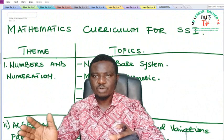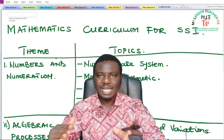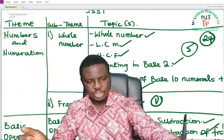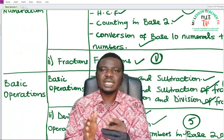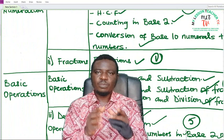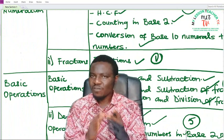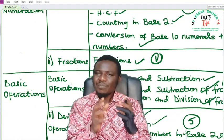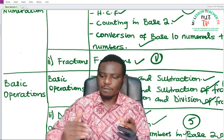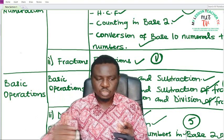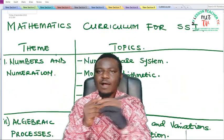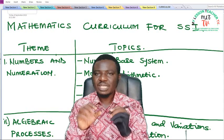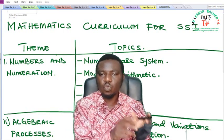Now, what was removed from the junior secondary? The junior had five themes but SS1 and SS2 now have four. The basic operations theme is no longer there, because having done basic operations from JSS1 to JSS3 you should be conversant with them. So basic operations are no longer taught in senior secondary — rather, you begin to apply them across the other four themes.